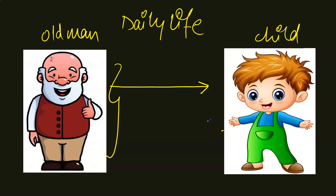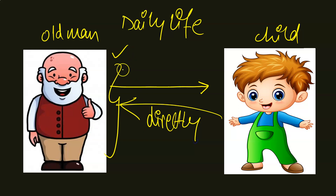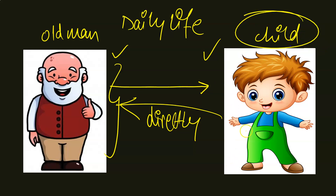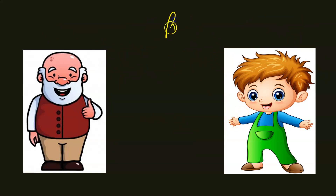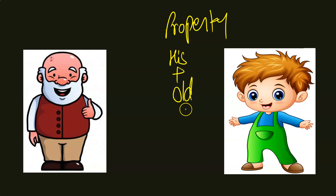Whatever the old man owns is directly and indirectly the child's property — directly while the old man is alive and indirectly after. So whatever the child earns on his own, like a house or a car, he will have his own property plus he will also get the property of his father because of inheritance.